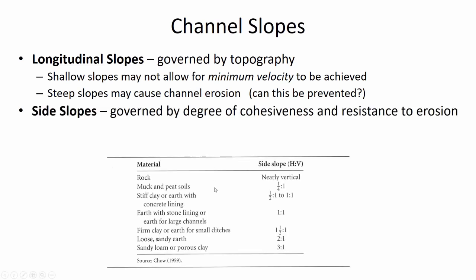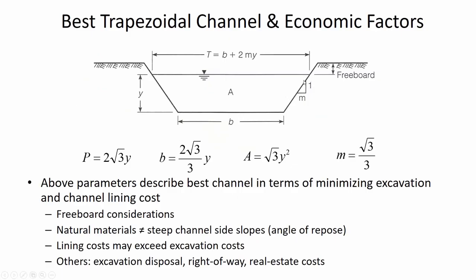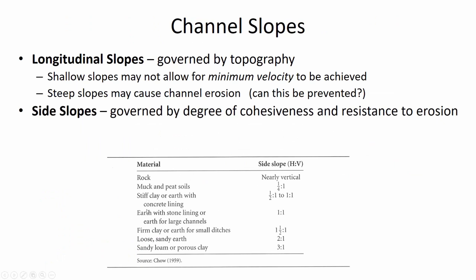Side slopes are the other type. The longitudinal slope is in the direction of flow, but the side slopes are governed by the material. For loose sandy earth, a two-horizontal-to-one-vertical slope can be sustainable. In the case of rock, it could be nearly vertical — you could have a rectangular channel chiseled into stable rock — and all shapes in between are possible depending on material properties.